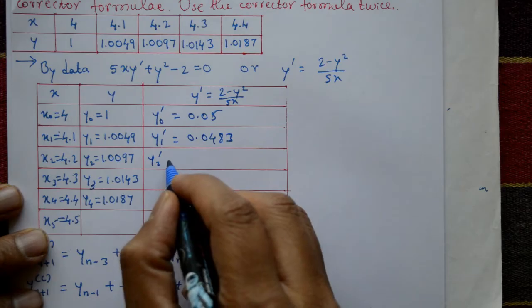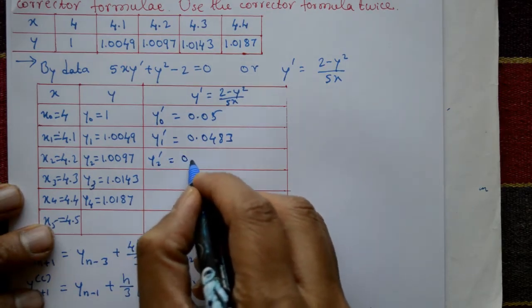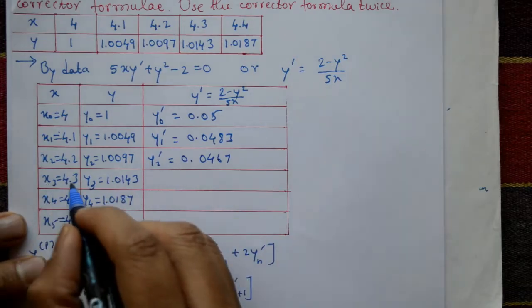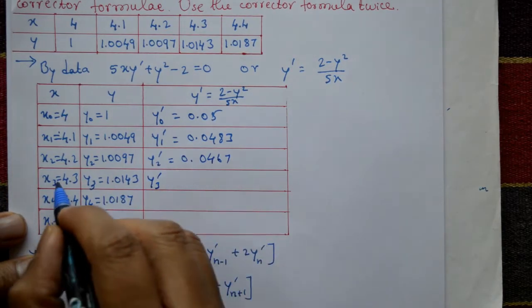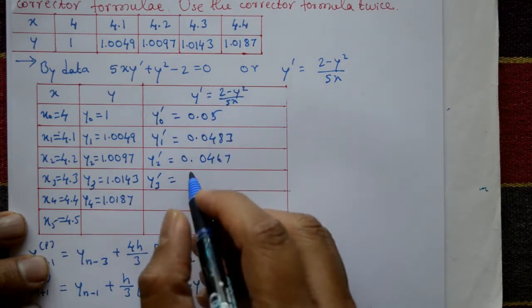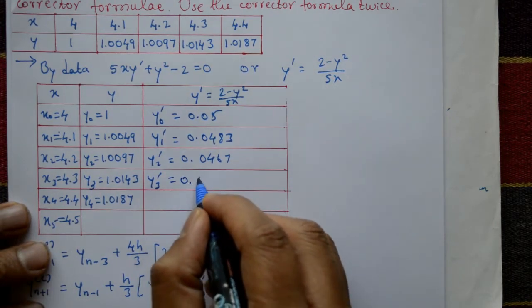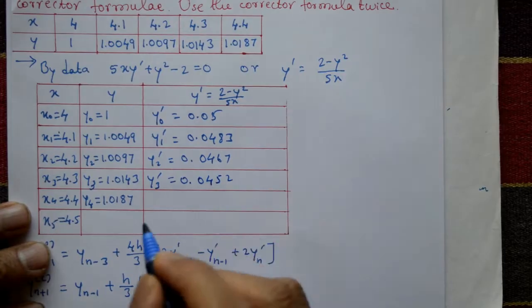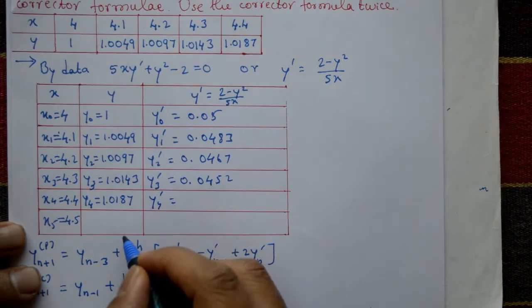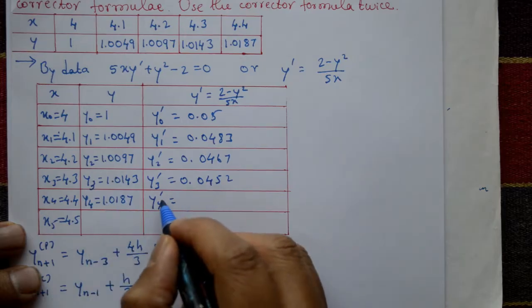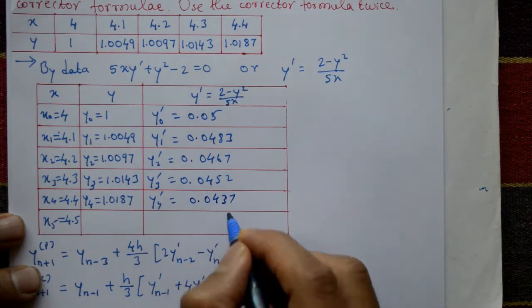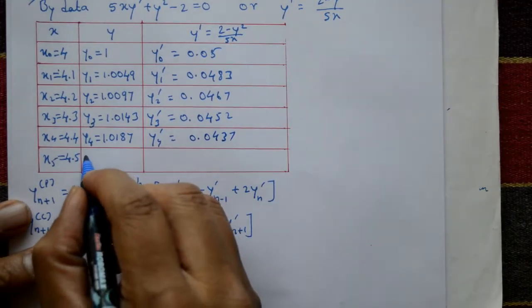Next, substituting x2 and y2 into the equation gives y2' = 0.0467. Substituting x3 and y3 gives y3' = 0.0452. Finally, substituting x4 and y4 gives y4' = 0.0437.